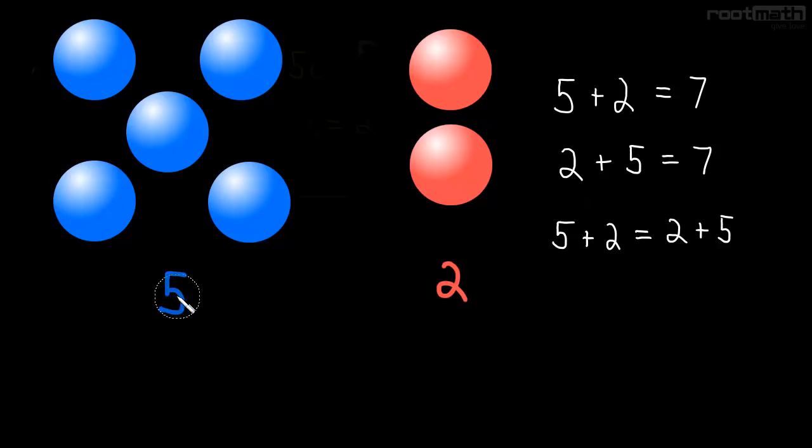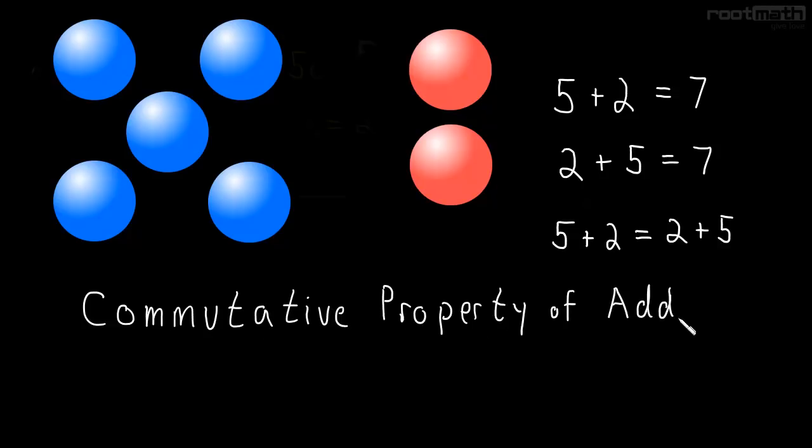And this is a really important property of addition, it's called the commutative property of addition. And it says that if we have any two numbers, a and b, then a plus b is equal to b plus a. So it doesn't matter which order we add two numbers in.